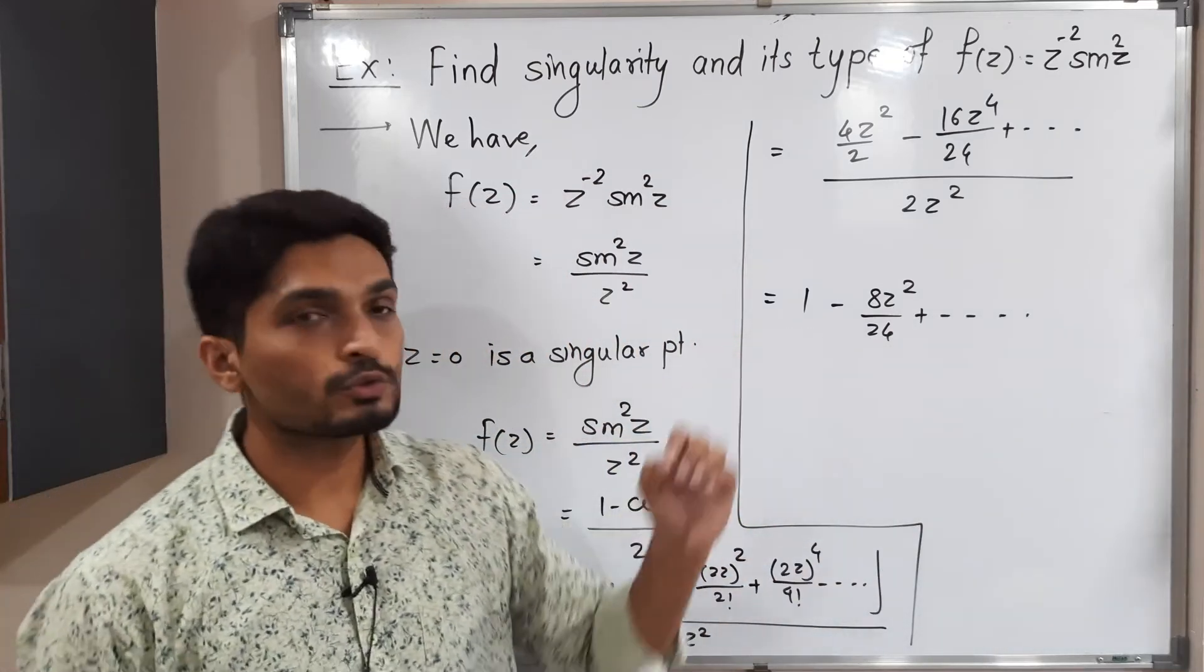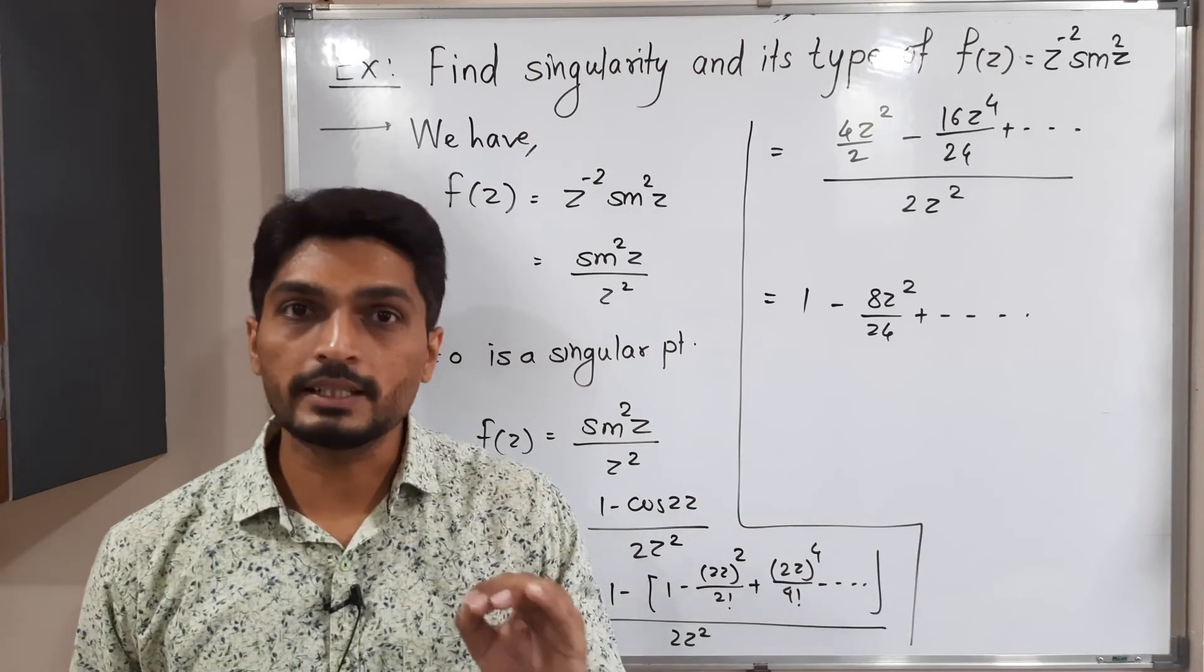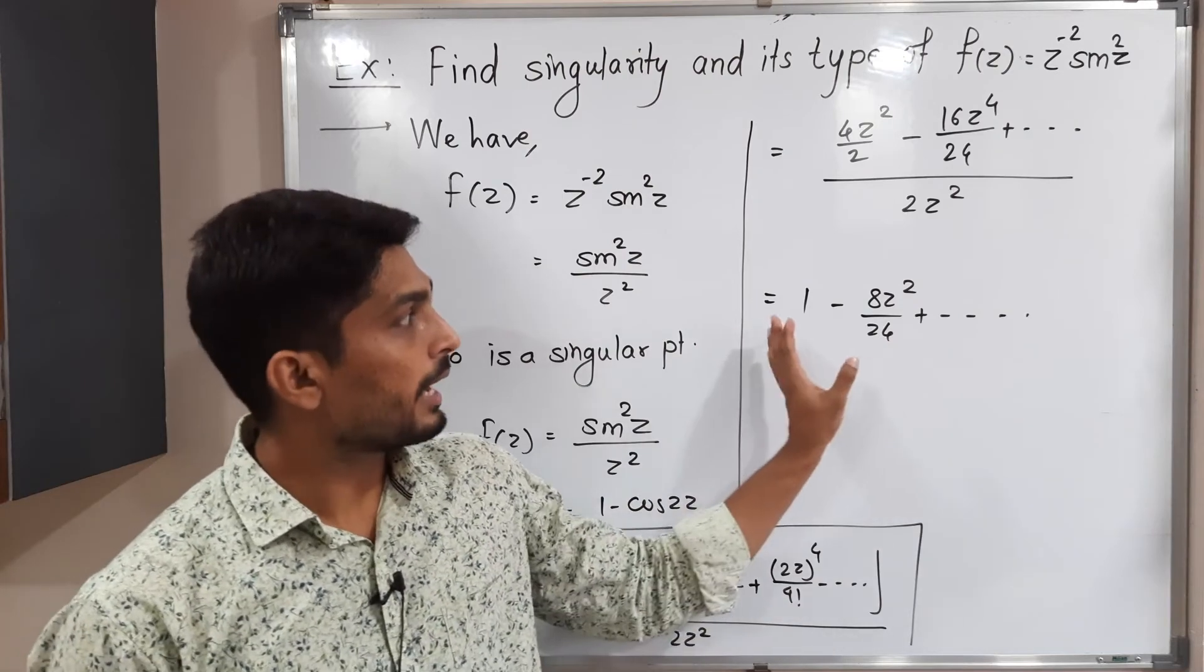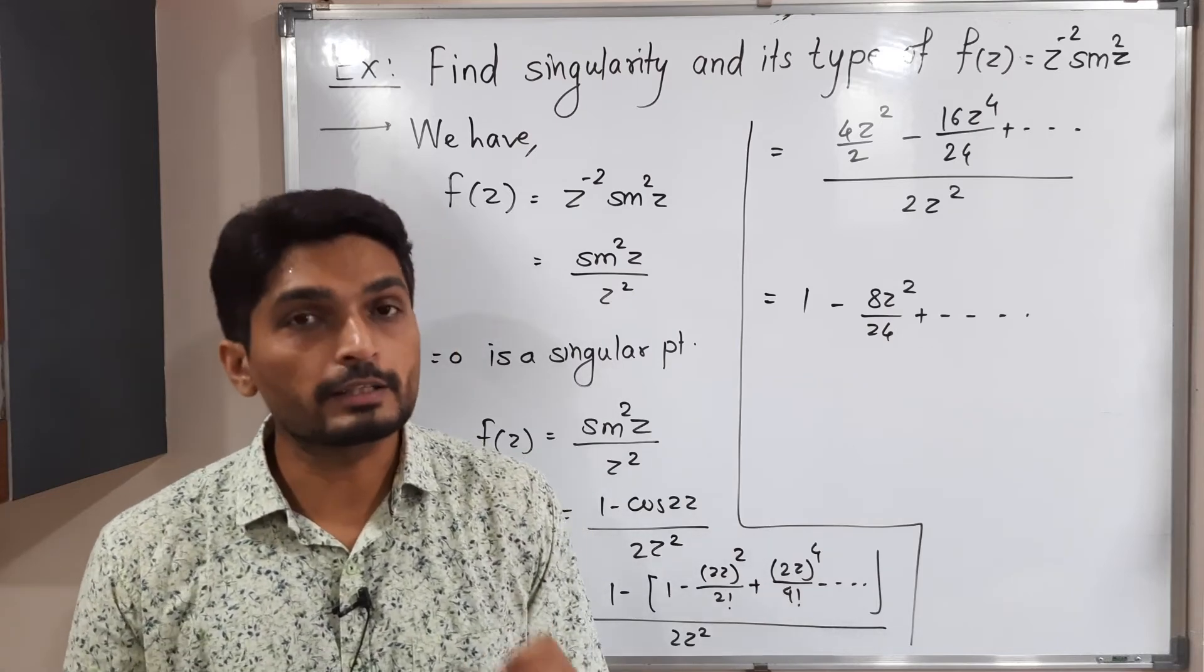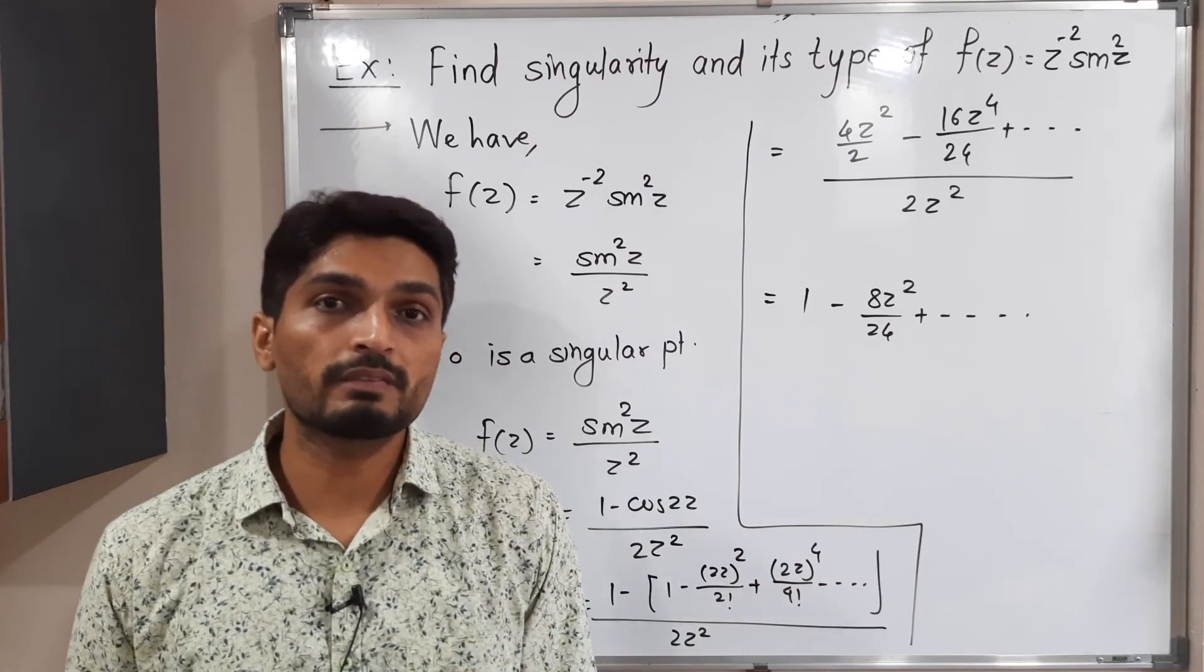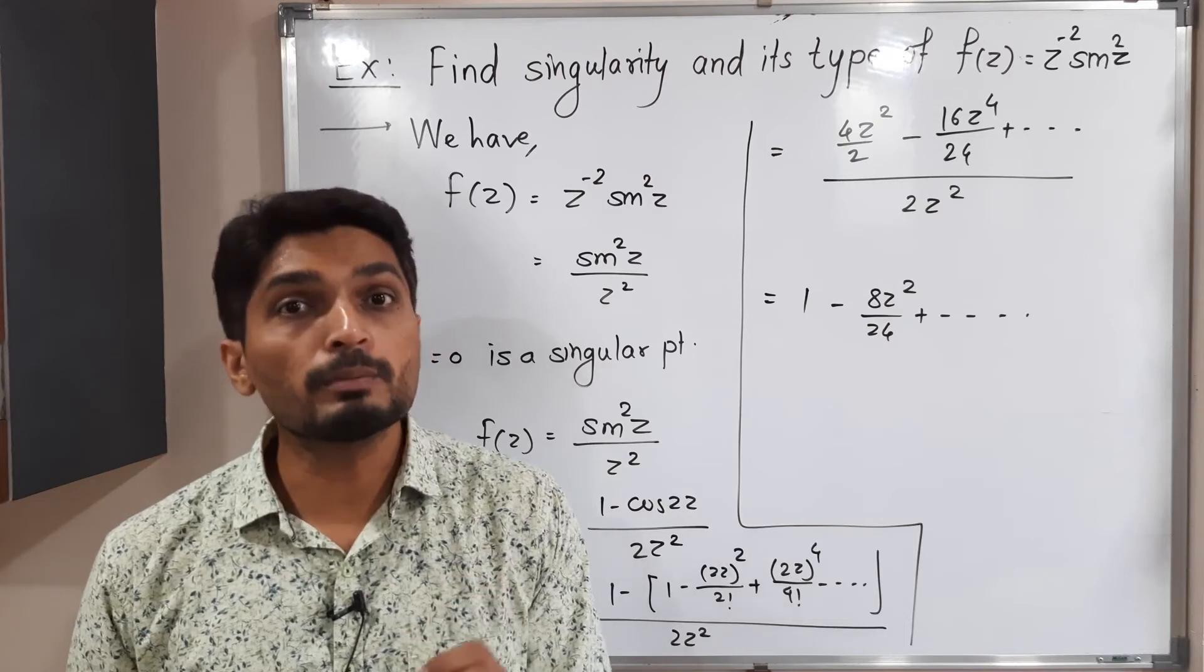As you can see there is no term where z is in denominator. That means this is the analytic part of a Laurent series. So it has no principal part. That's why we call it a removable singularity.